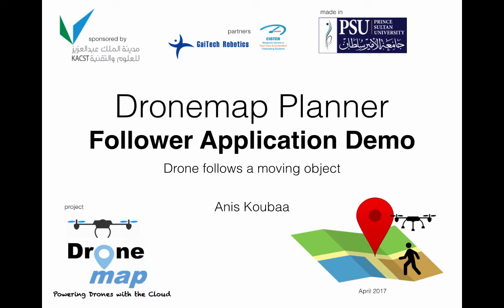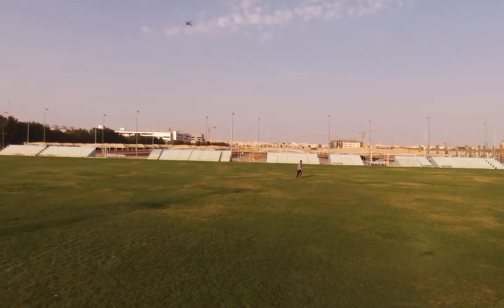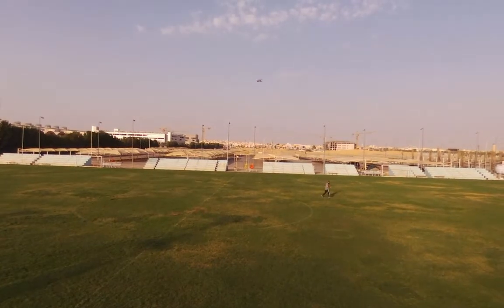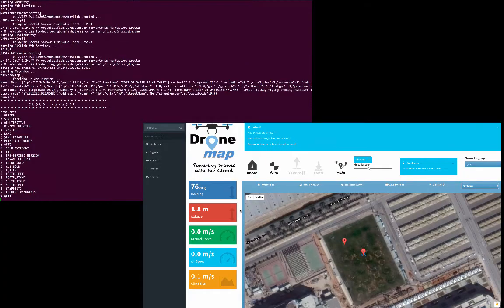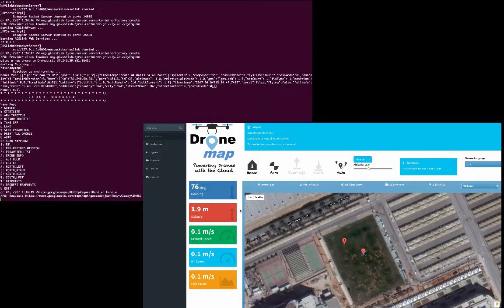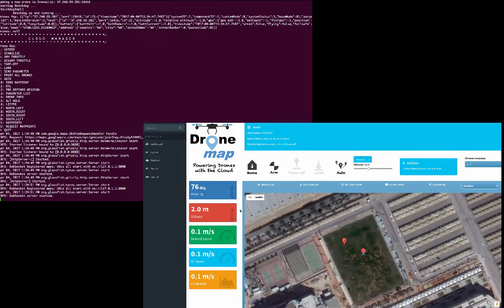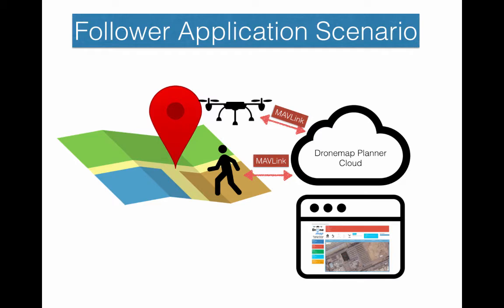In this video, we will demonstrate the follower application where a drone will follow a moving object — a person in this case — using the DroneMap Planner cloud platform for drone management. The application works as follows.